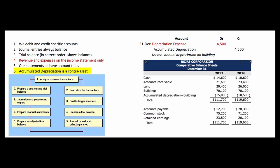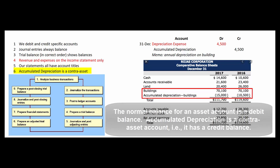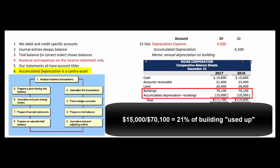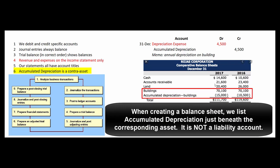Finally, accumulated depreciation is a contra-asset account — it hangs out with the assets but has a credit balance. Remember, the normal balance for an asset account is a debit balance, but accumulated depreciation shows how much we've used up of a fixed asset. For example, Rojas Corporation has used up about 20% of the value of their building, which originally cost $70,100; they've already booked $15,000 worth of accumulated depreciation. When making your balance sheet, be sure to put accumulated depreciation right next to the asset it belongs to — do not put it on the right-hand side of the balance sheet. It will still balance, but accumulated depreciation is a contra-asset account: it hangs out with the assets but has a credit balance.